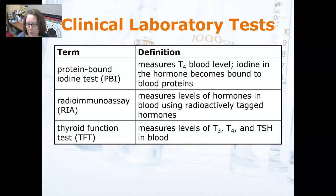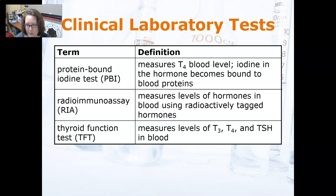A Protein Bound Iodine test measures T4 levels in the blood, but I've hardly ever seen that done. It is far more common to do a Thyroid Function Test, which is the last one listed here. It measures the levels of T3, T4, and TSH in the blood. You can also do free T3 and free T4. TSH is what the pituitary produces to stimulate the thyroid, while T3 and T4 are what the thyroid produces, giving you a good assessment of thyroid function.